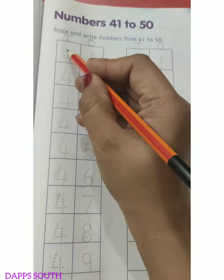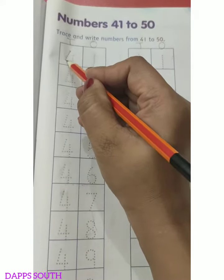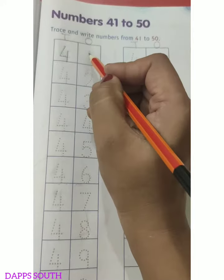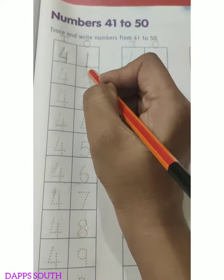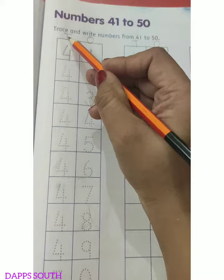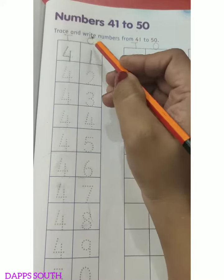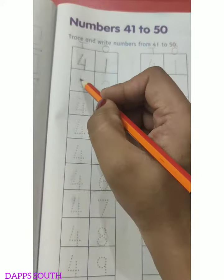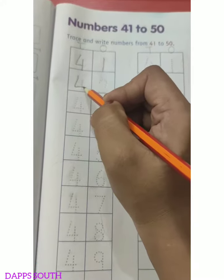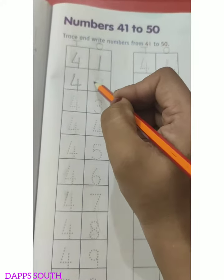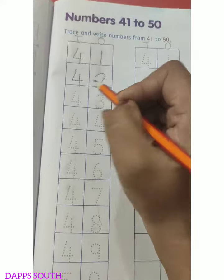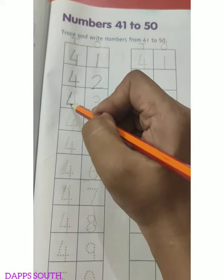So let's start writing. 4, 1, 41. 41 may kitne 10s hai? 4 10s. Or 1s kitne? 1 1s. Same as 4, 2, 42. 4, 3, 43.